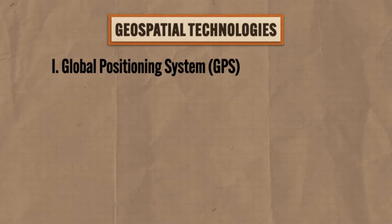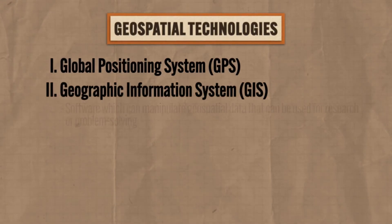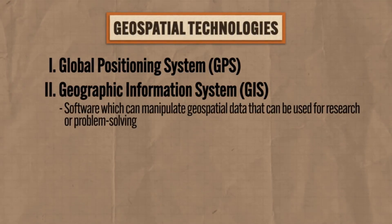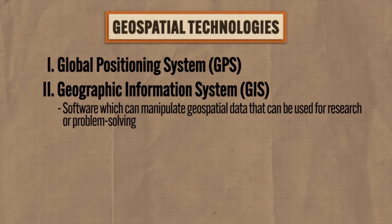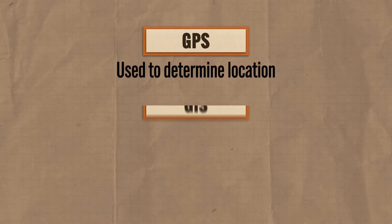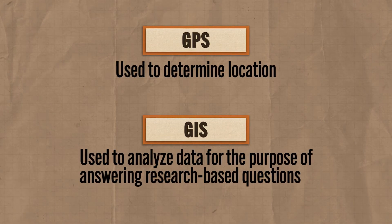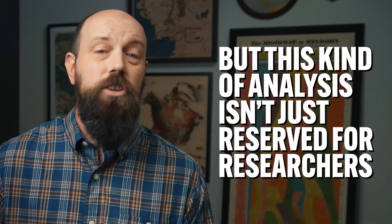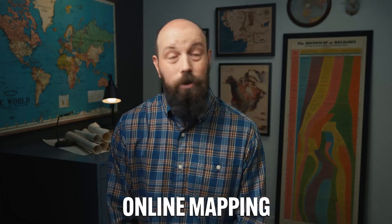The second geospatial technology you need to know is called Geographic Information Systems, or GIS. This is software which can manipulate geospatial data that can be used for research or problem solving. Don't get confused between GPS and GIS — GPS is used for determining location, but GIS is technology for analyzing data for the purpose of answering research-based questions. For example, GIS software can produce a map showing the spatial distribution of factories that dump pollution into the environment and then compare it to the location of environmentally sensitive areas like wetlands. Thanks to online mapping platforms, non-scholarly people like you and me can access all this data and answer our own questions.